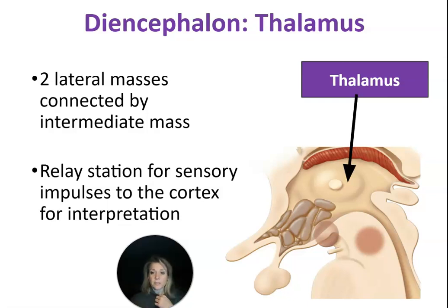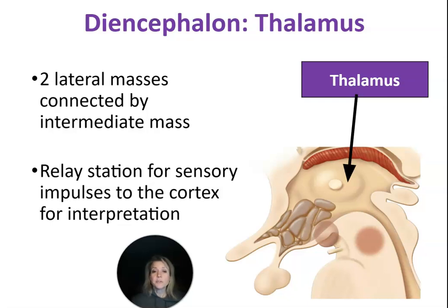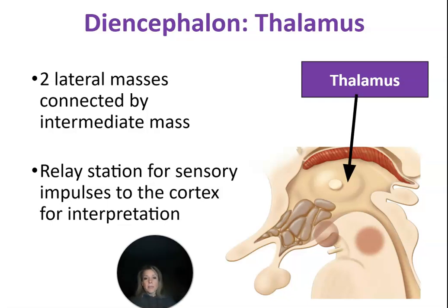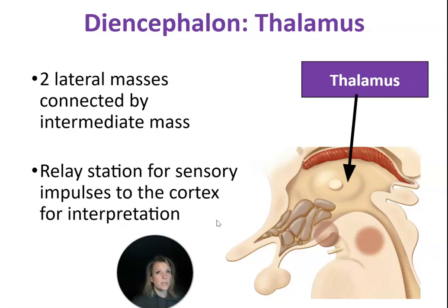When you cut the yo-yo shape in half, it looks like this. The peg part of the thalamus is called the intermediate mass. The thalamus is going to act as the relay station for sensory impulses to the cortex for interpretation, and it's going to give us some very crude recognition of the incoming sensory information — we just know whether it's pleasant or not, but the thalamus isn't going to help us identify it.